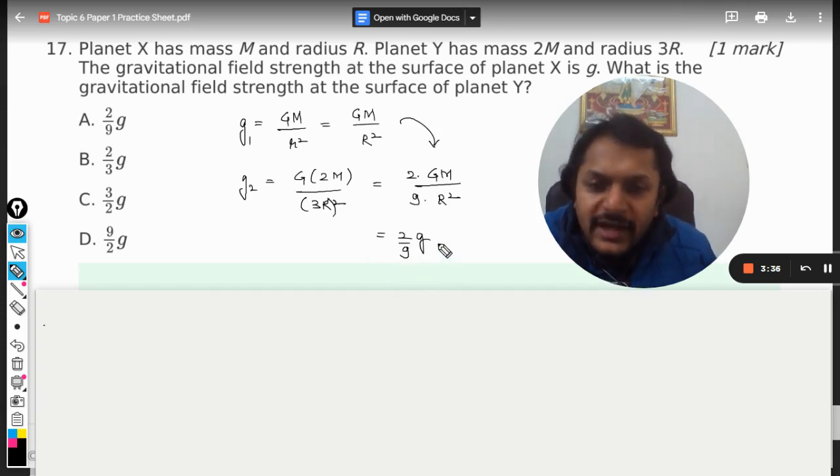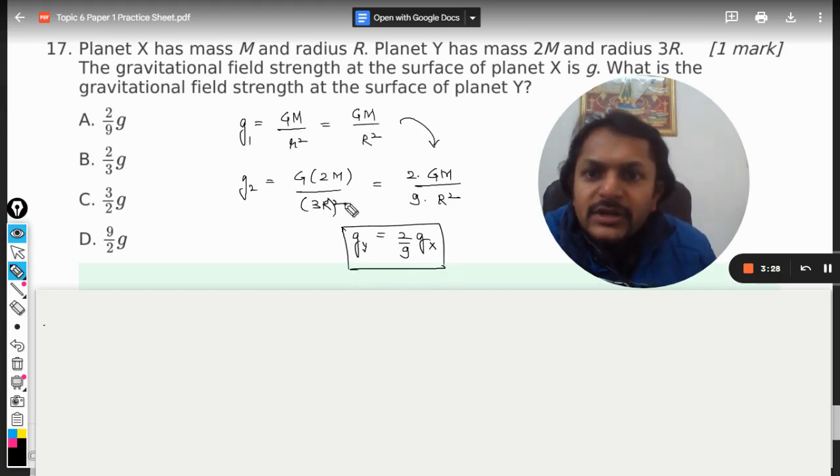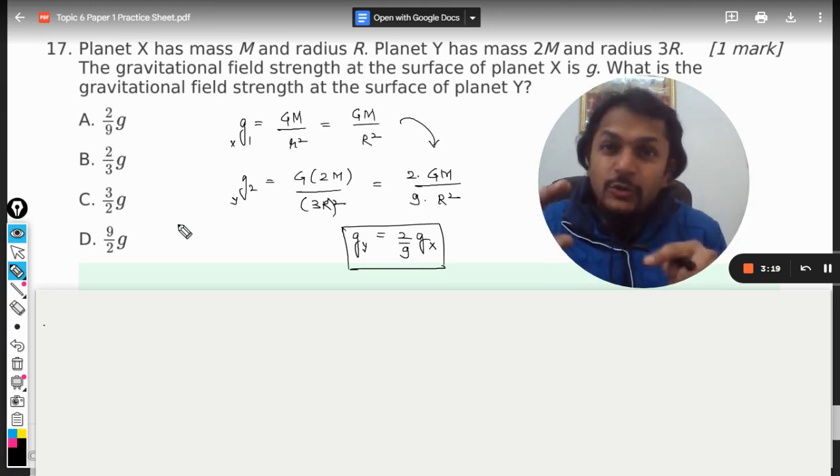2 divided by 9 into g. So this is our g_y and this is our g_x. I have written it 1, although it should be y. g_x and this should be y, so please do not get confused in 1 and 2, x and y's.